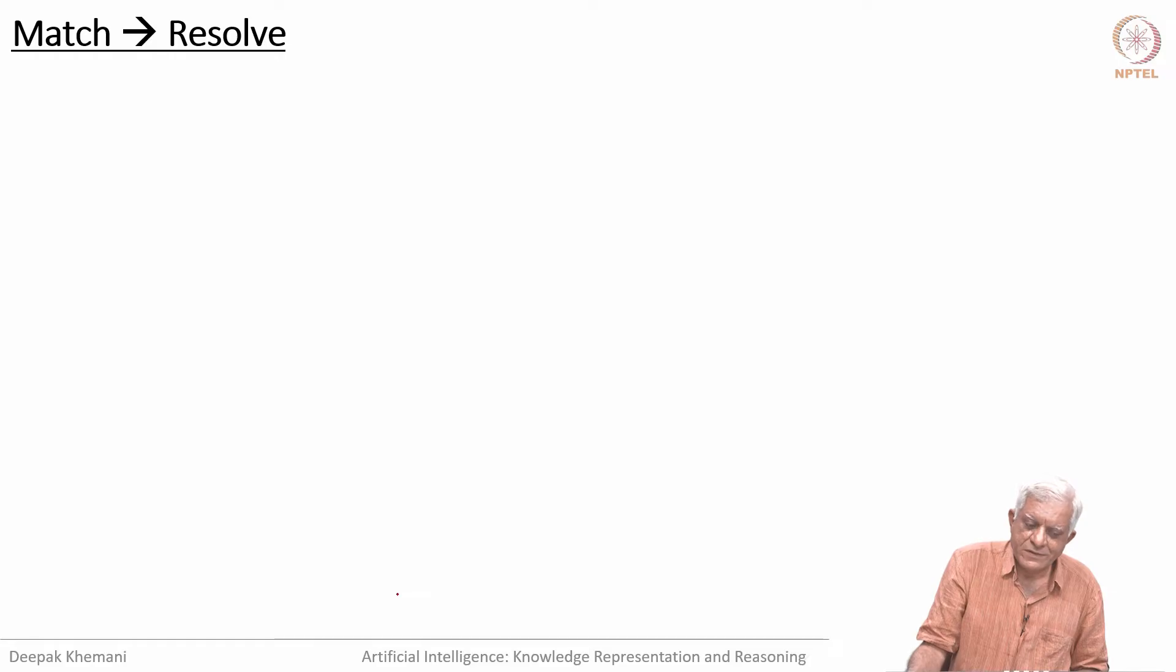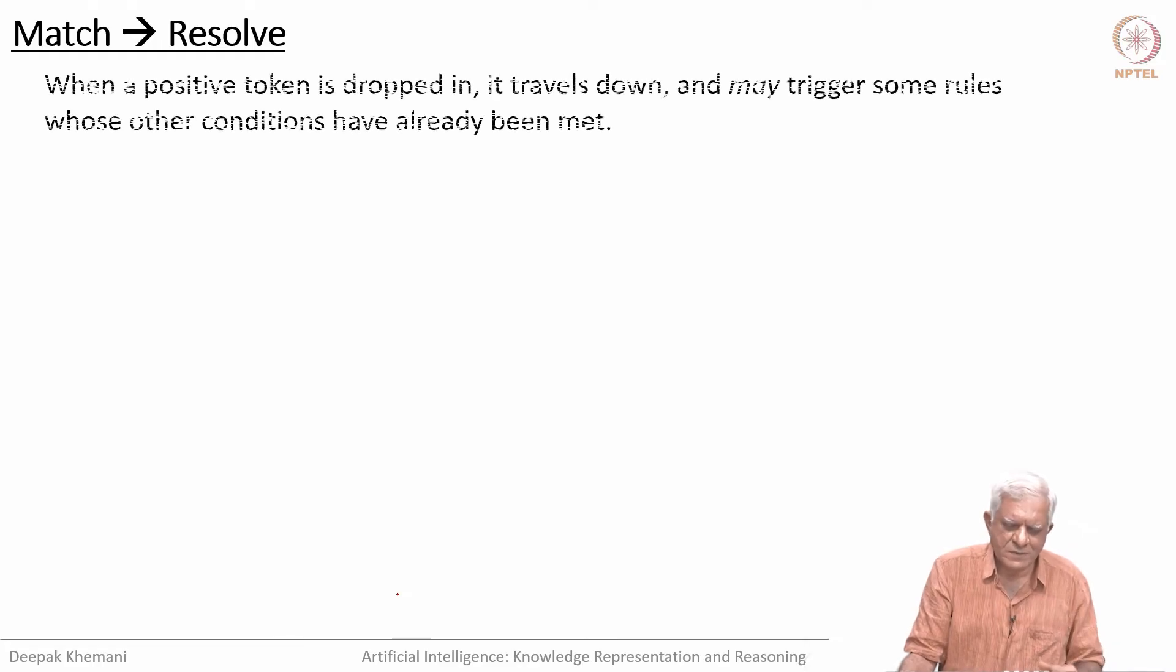Now, let us talk about the conflict resolution strategy. We have got an idea of what is happening. We have created the Rete network, and we start putting the working memory elements one by one. In the initial phase, all the knowledge base is put in in one go, then it all settles down. Some rules go into the conflict set; one of them is selected. It is going to make some changes, and it will be put back into the Rete network again. That is the process.